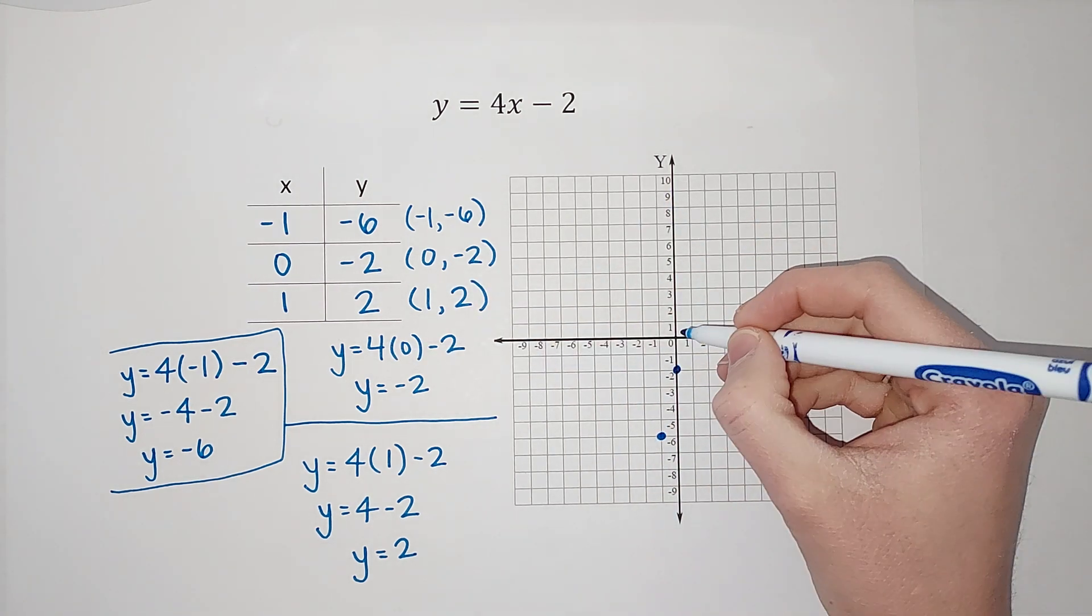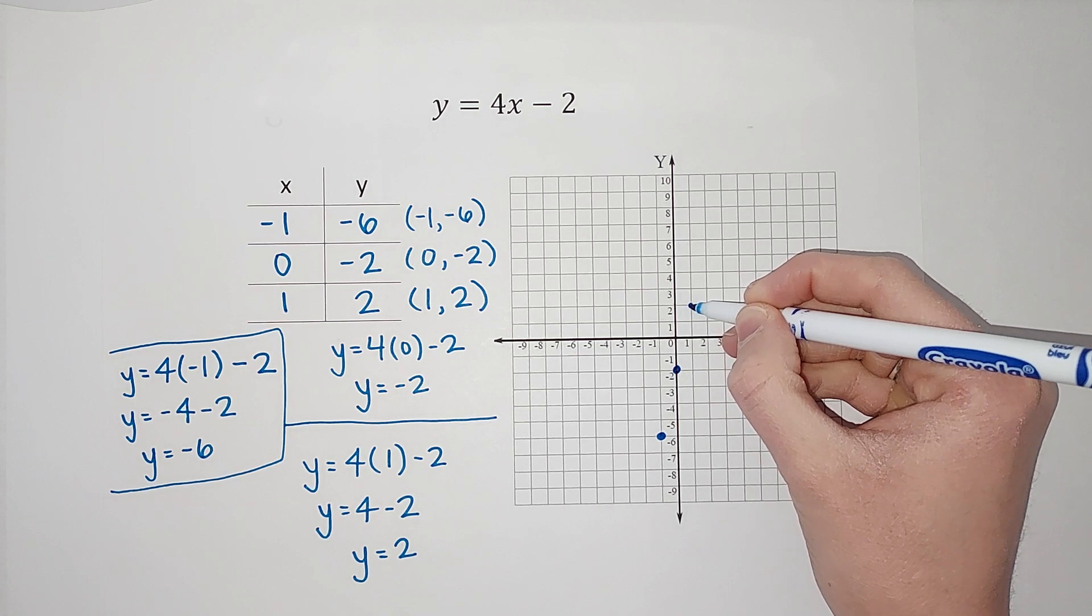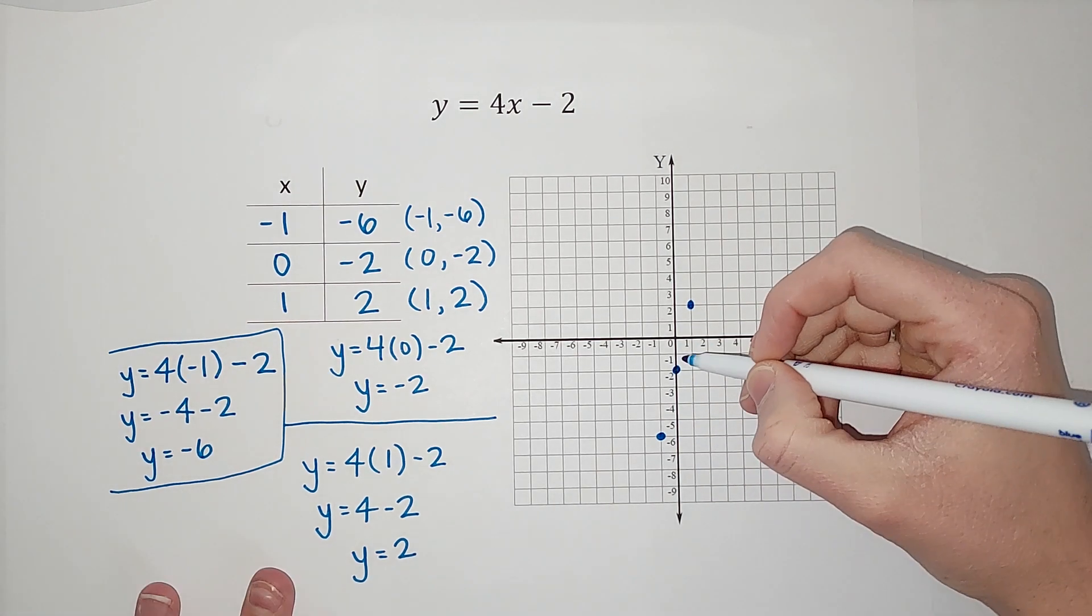All right. My last ordered pair is 1, 2. So again, start at 0, 0. Right 1, up 2. Look at that.